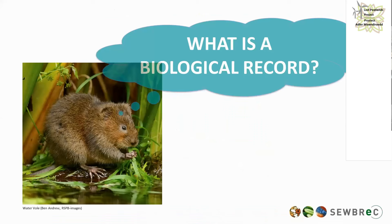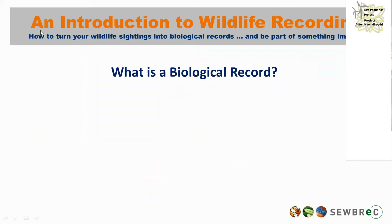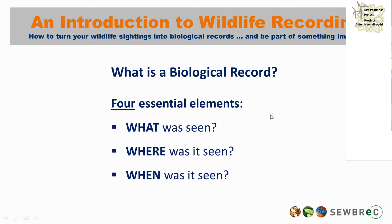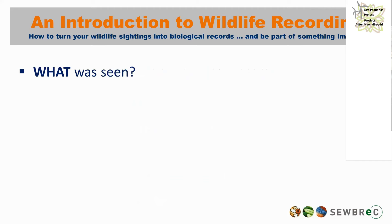The main aim of today is: what is a biological record? There are four essential elements: what was seen, where was it seen, when was it seen, and who saw it — often referred to as the four W's. For the first part of my presentation, I'm going to run through each of those in a little bit of detail.